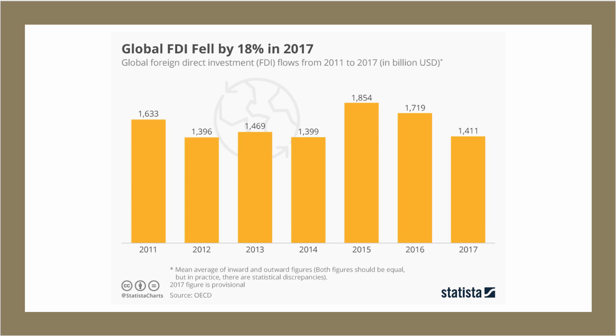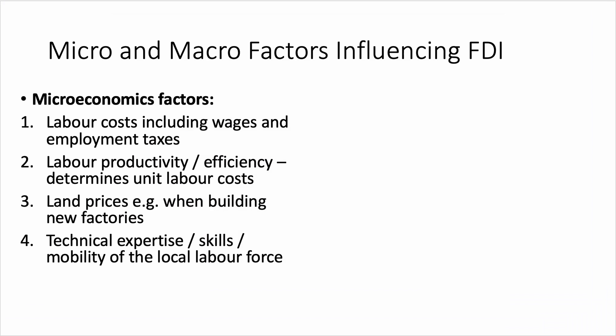Over 1.4 trillion US dollars worth of FDI flowed through the global economy in 2017. In terms of synoptic thinking, what are some of the microeconomic factors influencing FDI decisions? Micro, of course, refers to decisions taken at the level of the individual firm or the industry.